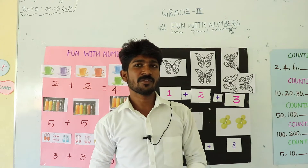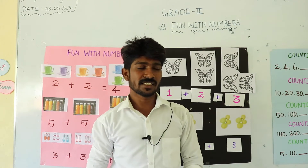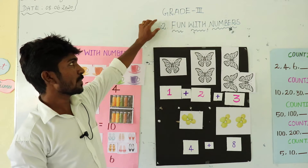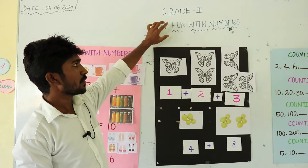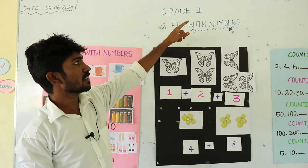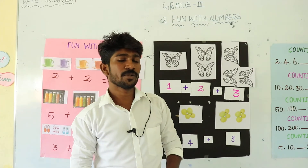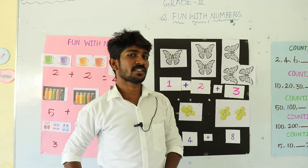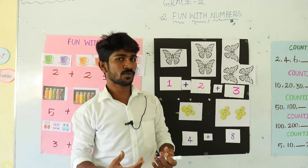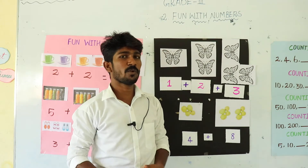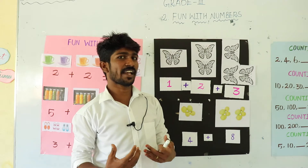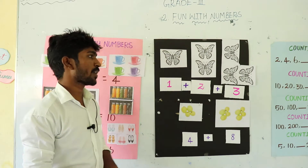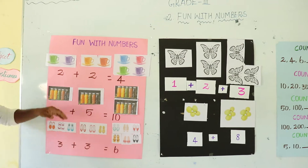Good morning students. I am a Grade 3 math teacher. Today we are going to learn about chapter number 2, fun with numbers. So already you know numbers means natural numbers, starting from 1, 2, 3, 4, 5, 6, 7, 8, 9, 10, and so on. Okay students, now let me start.